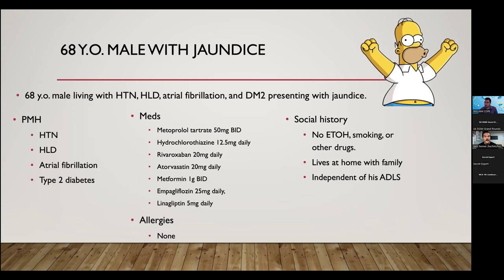Jaundice is a very rich chief concern because it has a broad differential diagnosis, but also affords a very structured and systematic approach. The clinical finding of jaundice translates to the laboratory finding of hyperbilirubinemia. We can ask ourselves: what are the mechanisms by which individuals develop hyperbilirubinemia? The first branch point really comes from what is the source of those excess bilirubin levels in the bloodstream — is it because the hepatobiliary system is having difficulty processing, conjugating, and excreting bilirubin, or is there something in the peripheral circulation leading to excess production of unconjugated bilirubin?